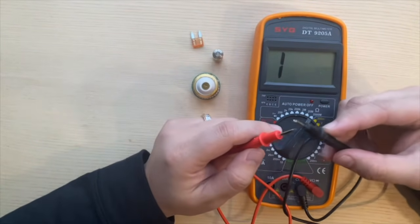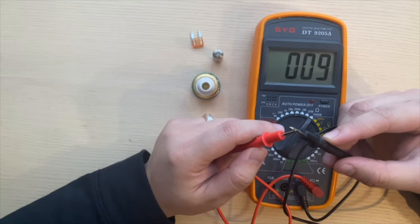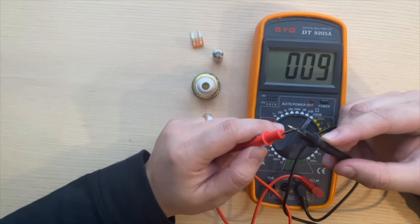If I go ahead and touch them, I'm going to get a number very close to zero, or in our case 009, which means that there is current currently going through.